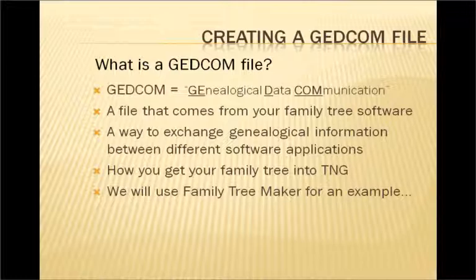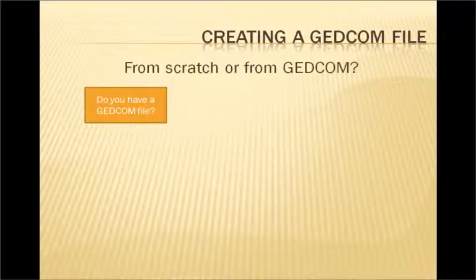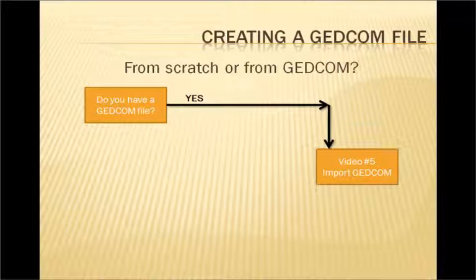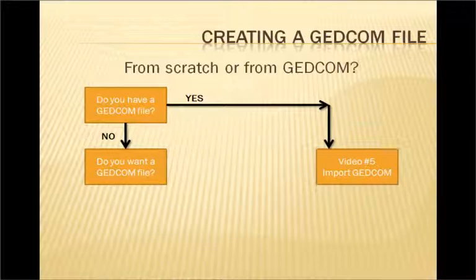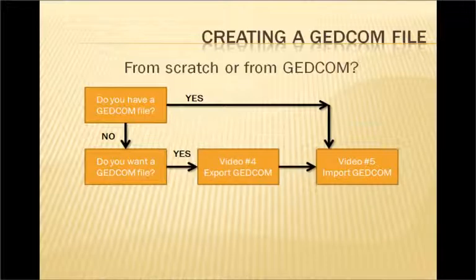We are now going to show you how to get your family information into a GEDCOM file and then into TNG, using my own personal Family Tree Maker as an example. Before we start, there are a couple of questions to ask. First, do you already have a GEDCOM file ready to use? If yes, then go directly to video number 5 and import it into TNG. If you don't have a GEDCOM file ready, do you want to create one, or do you want to enter all the information into TNG manually right from scratch? If you do want to use GEDCOM, then continue watching.